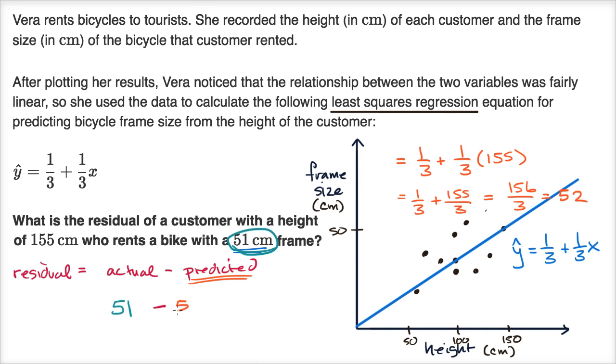So the predicted on our line is 52. And so here, so this person is 155. We can plot them right over here. 155. They're coming in slightly below the line. So they're coming in slightly below the line right there.